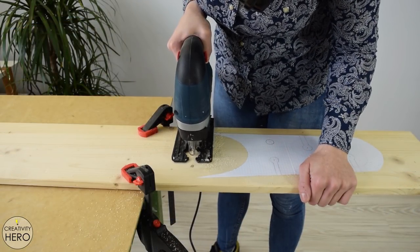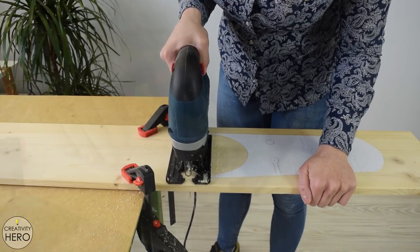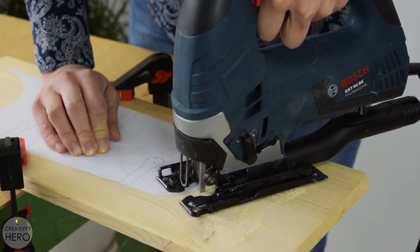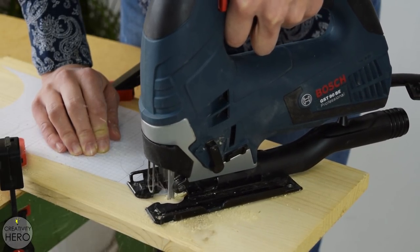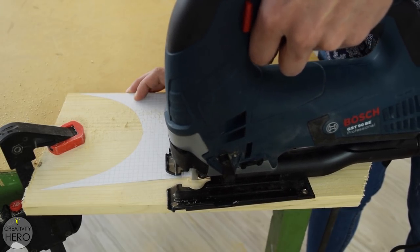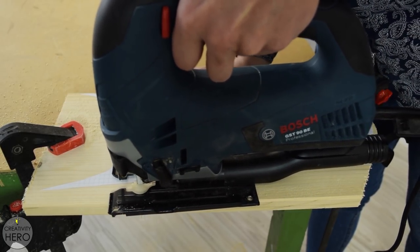I clamped the board onto the table and started cutting with a jigsaw making sure to cut outside the line. Later I'll make some adjustments with a rasp. I installed a clean cut blade onto the jigsaw which helped me avoid tear outs and get clean cuts.